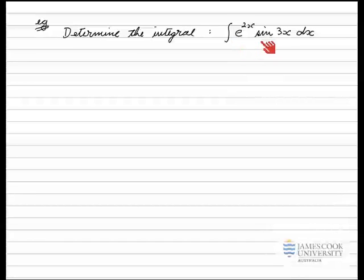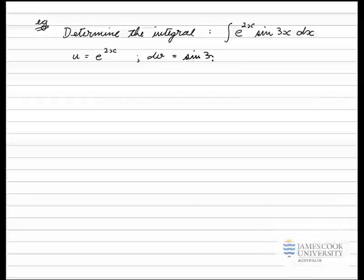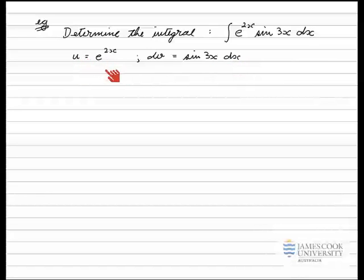I'm going to demonstrate that method. This is the method used for when we're integrating a product where neither of the functions simplify when being differentiated, so we just continue with integration by parts. I will call this integral i. If we go through and do the parts, it doesn't really matter which function you let equal u. In this case we'll go with the first one, e to the 2x, which means dv, the second part of my integration, is equal to sine 3x dx. The integration by parts will require du in terms of dx and v.